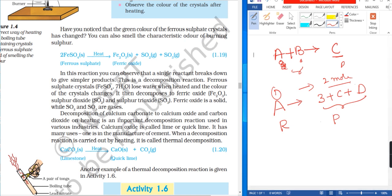Decomposition of calcium carbonate to calcium oxide and carbon dioxide on heating is an important decomposition reaction used in various industries. Calcium oxide is called lime or quick lime. It has many uses, including the manufacture of cement.